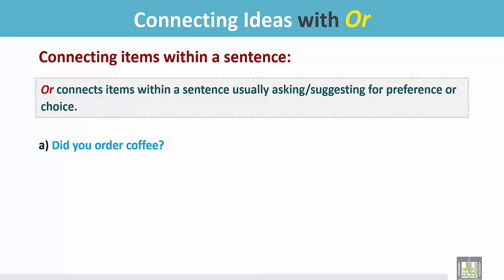Did you order coffee? Did you order tea? In these two sentences, we find two items. Coffee and tea. So, the person is asking you a question about these two items. And if we join them, the answer is like this. Did you order coffee or tea? These two items are joined by OR.